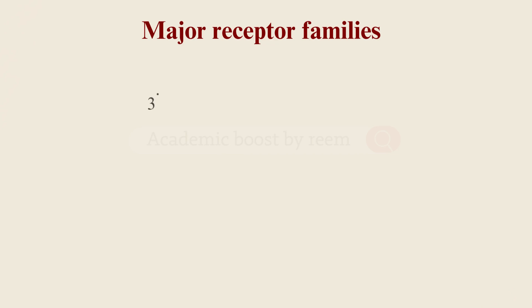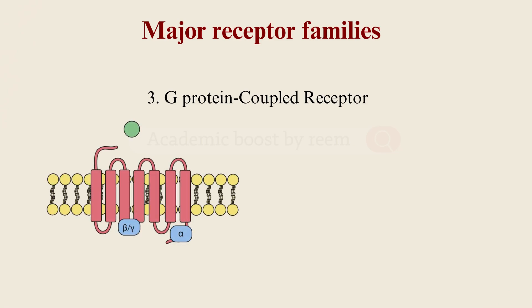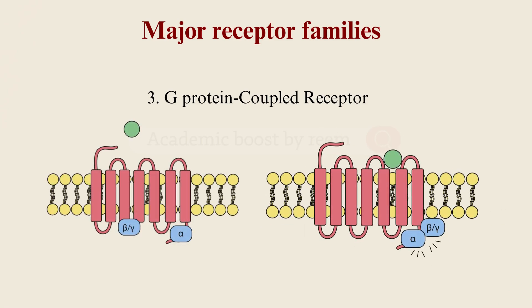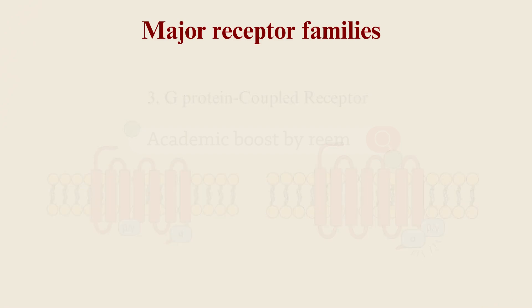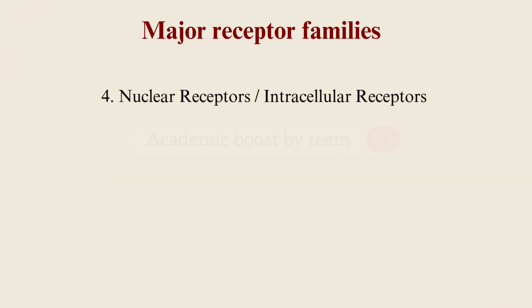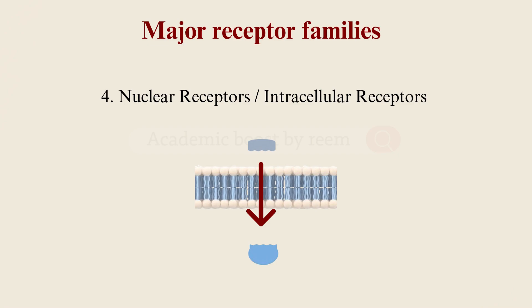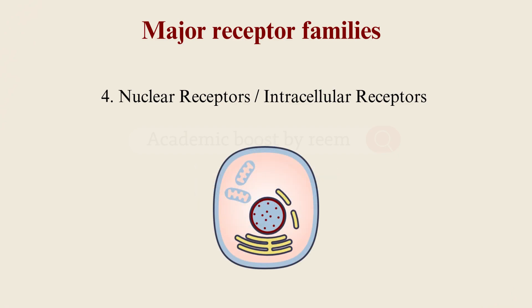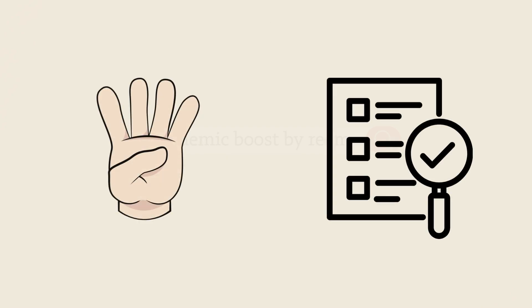Third, the most common: G protein-coupled receptors — when a ligand binds to them, it activates an attached G protein, triggering a chain of signals inside the cell. Fourth, nuclear receptors, or intracellular receptors — they are located inside the cell, either in the cytoplasm or directly in the nucleus. We're going to discuss the four families in more detail in another video.